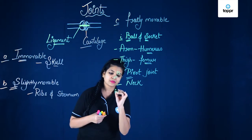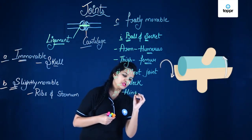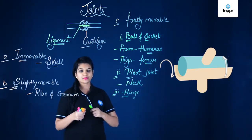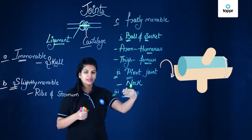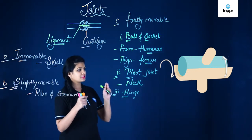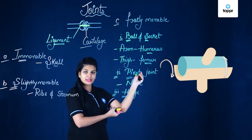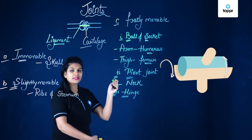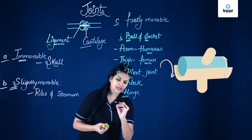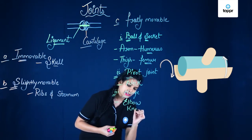The third joint is the hinge joint. The hinge joint can be simply understood by understanding the movement at a door — it moves in one plane. The same happens at the hinge joint. Only one-plane movement can be observed, for example in the elbow or in the knee. It moves only in one direction. The elbow or the knee are examples of the hinge joint.